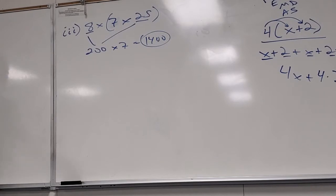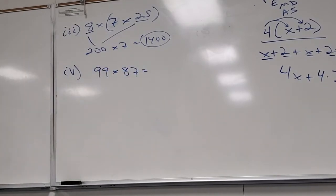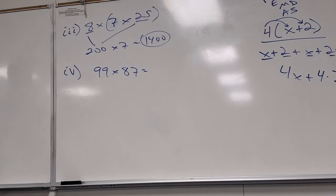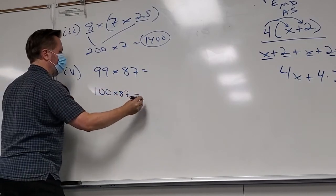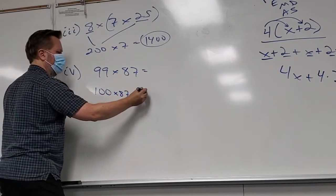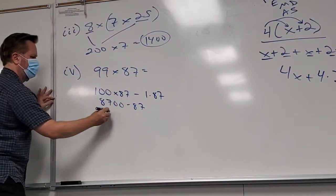What about ninety-nine times eighty-seven — exact answer, no long multiplication? Isn't ninety-nine times eighty-seven equal to one hundred times eighty-seven minus one times eighty-seven? That's eight thousand seven hundred minus eighty-seven, which is eight thousand six hundred thirteen. It's the reverse of the earlier trick.